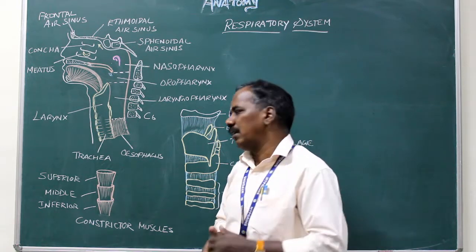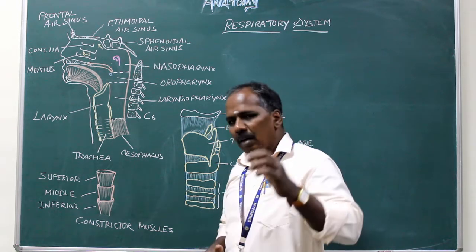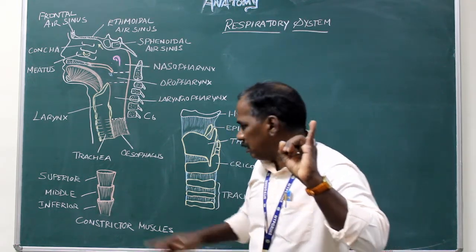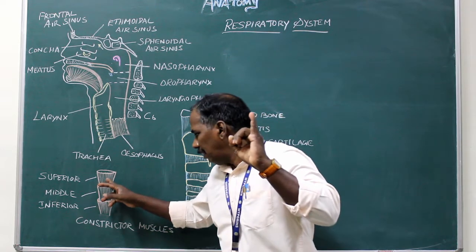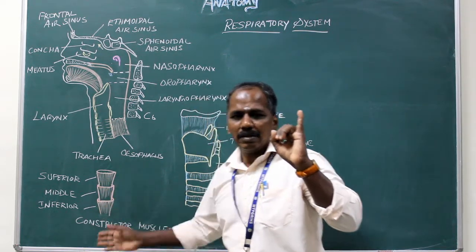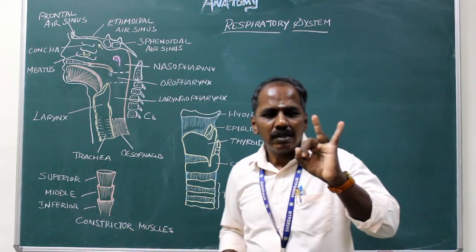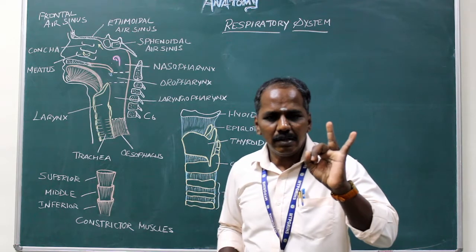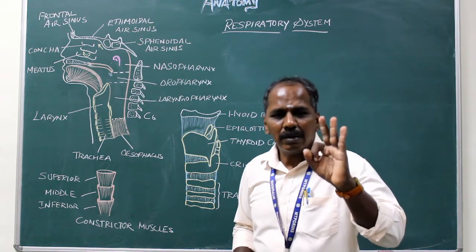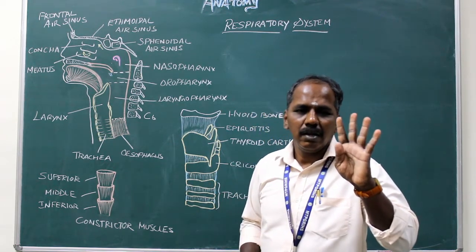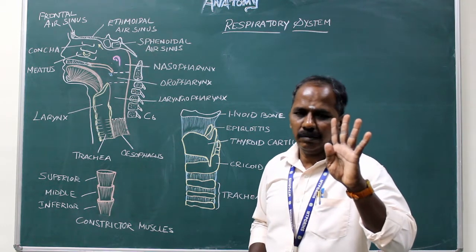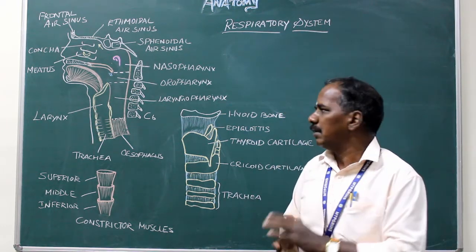Muscles of pharynx: It consists of three constrictor muscles — superior, middle, and inferior constrictor muscles — along with stylopharyngeus, palatopharyngeus, and salpingopharyngeus.